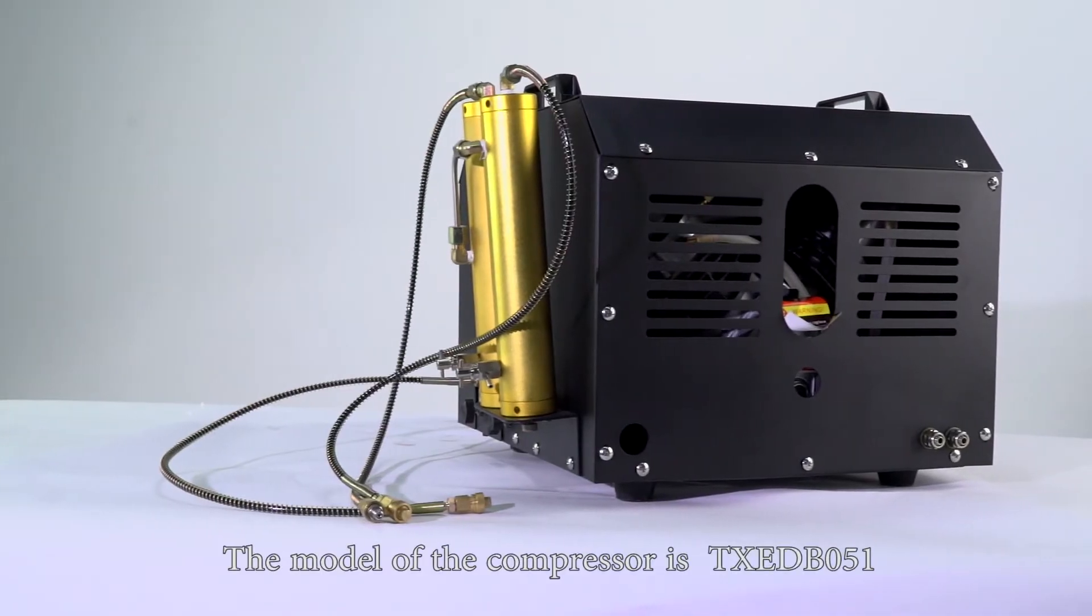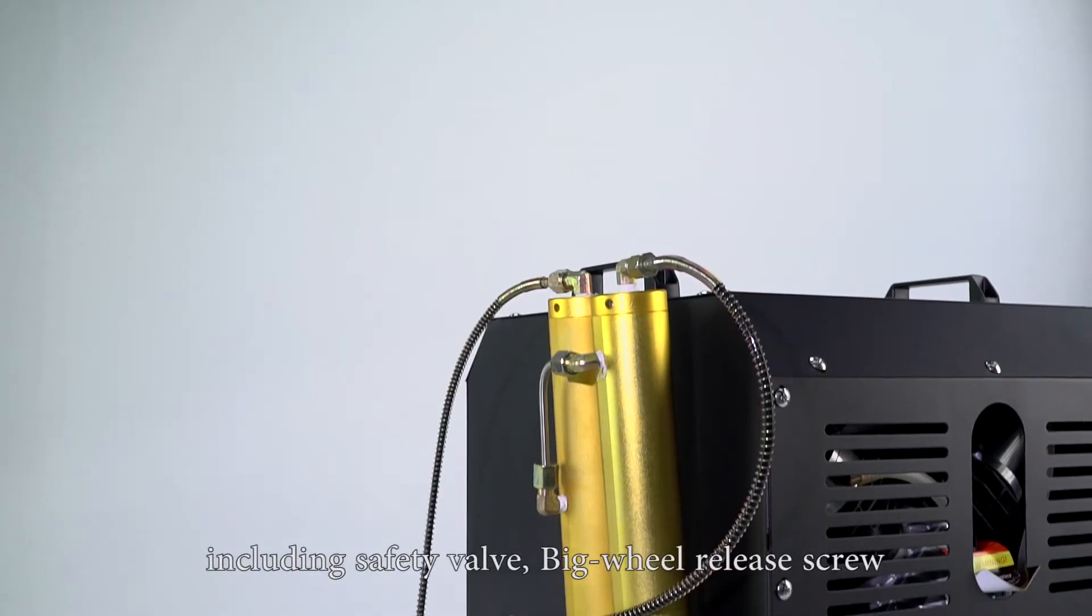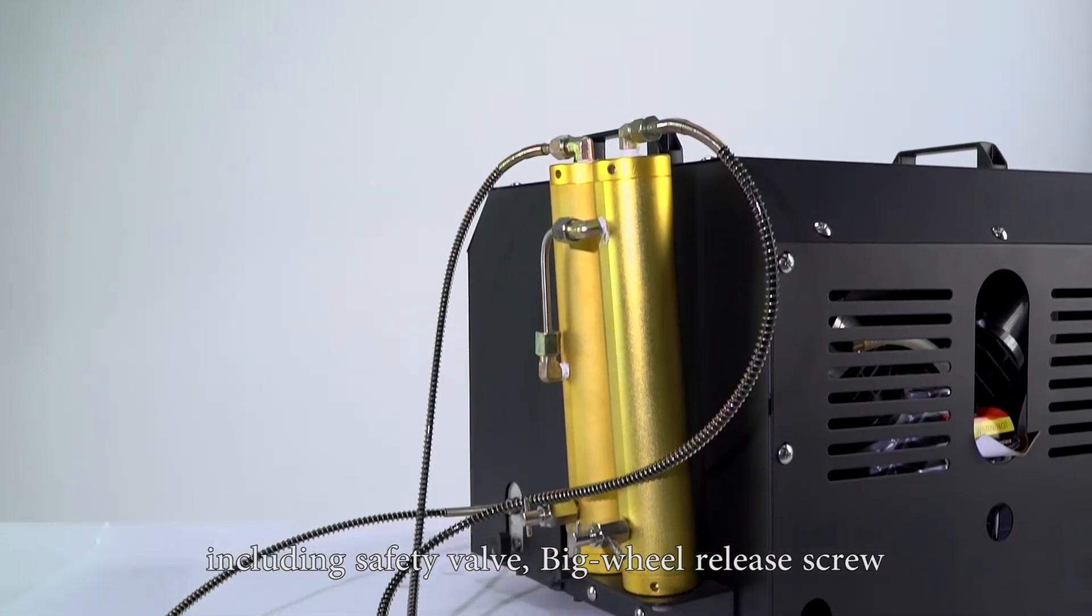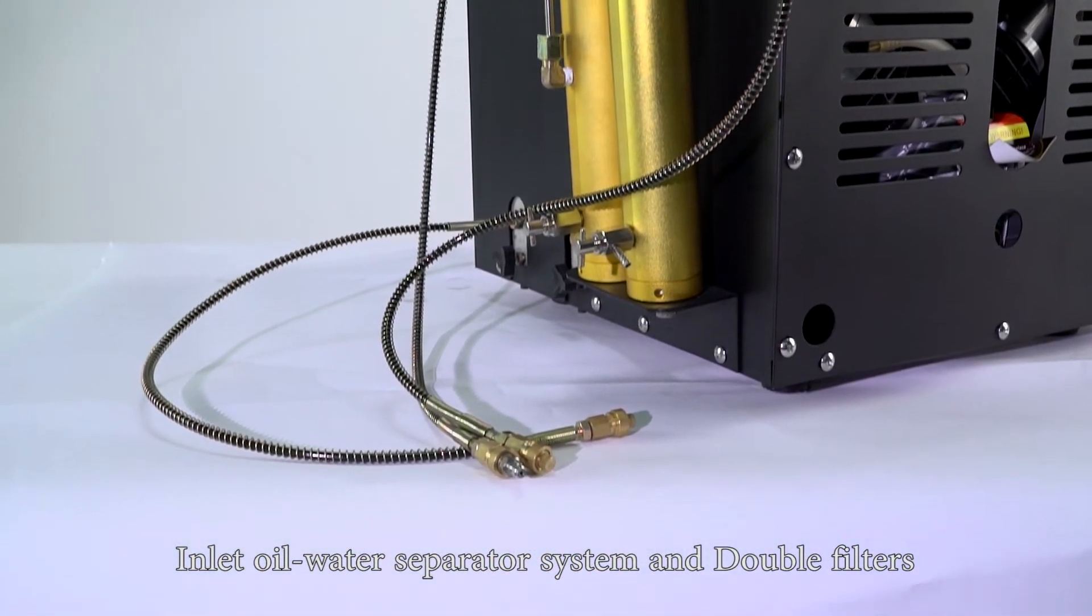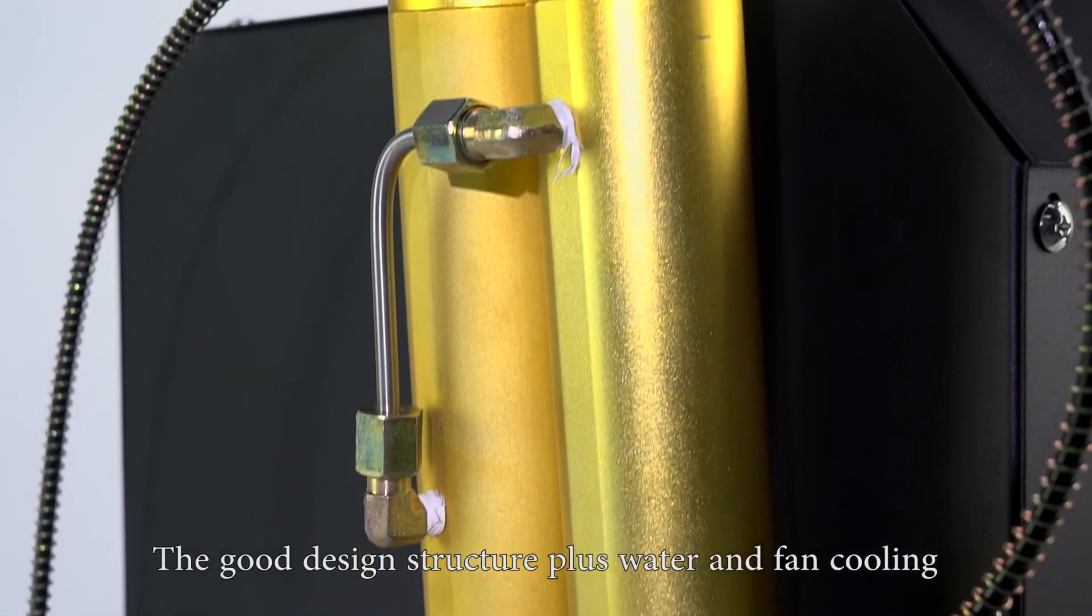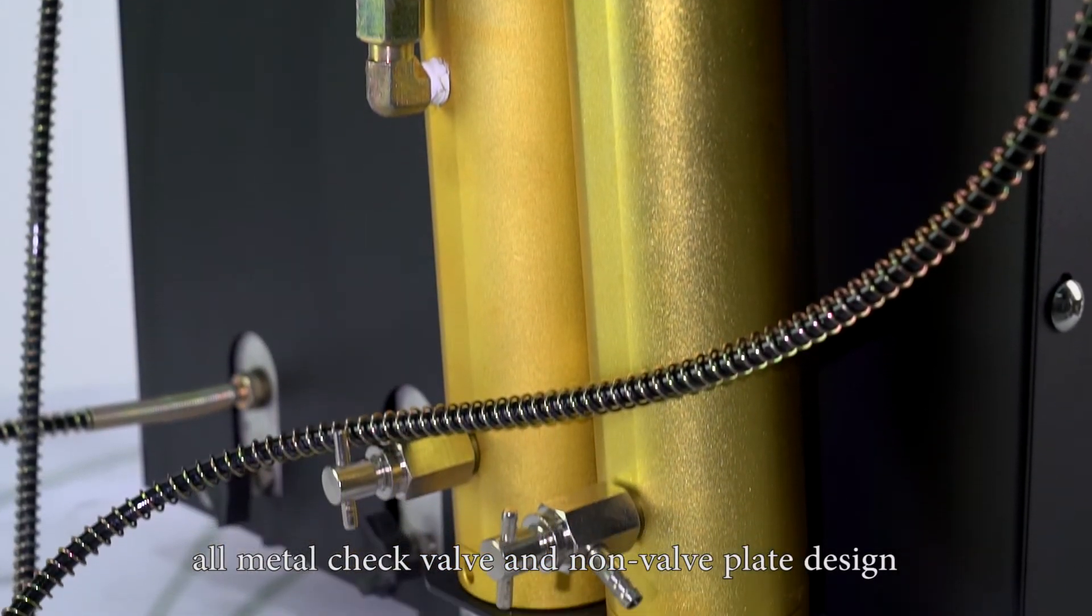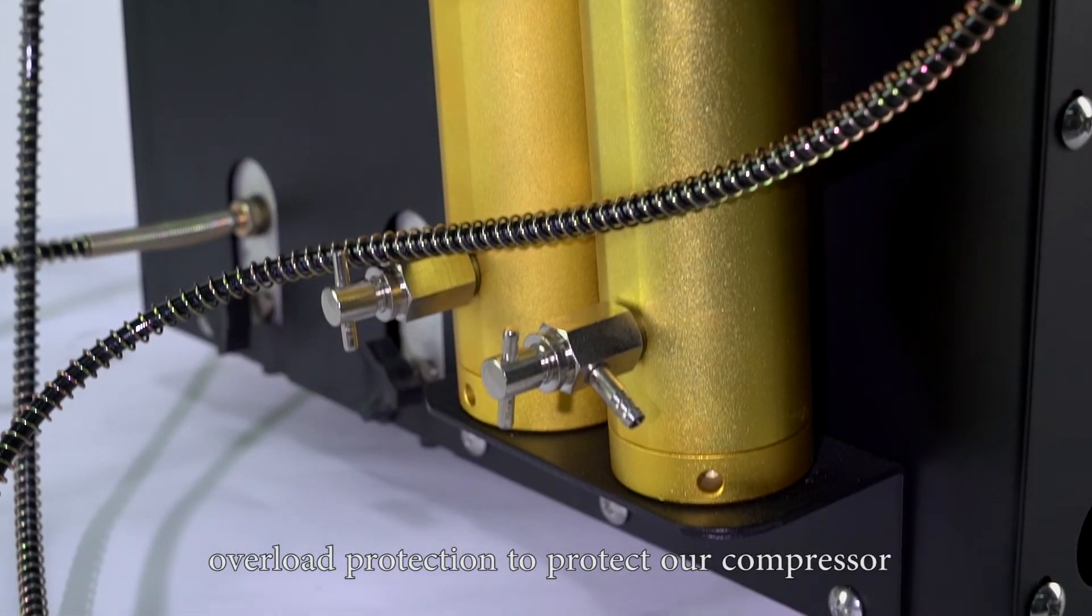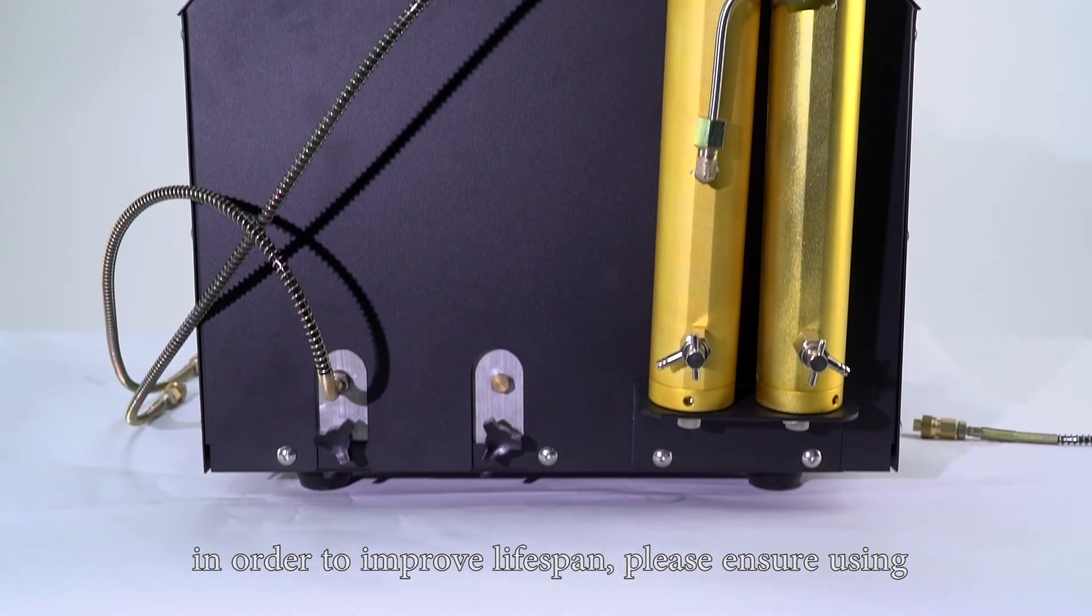The model of the compressor is TXED-B051, including safety valve, big wheel release screw, inlet oil water separator system, and double filters. High pressure stainless steel material radiator tube, good design structure plus water compressor and fan cooling, all metal check valve and non-valve plate design, overload protection to protect our compressor and improve lifespan.